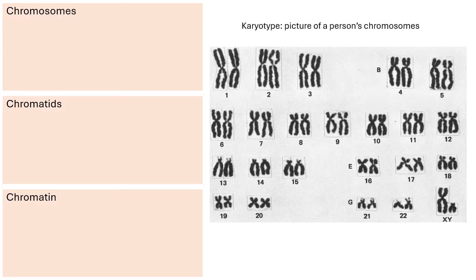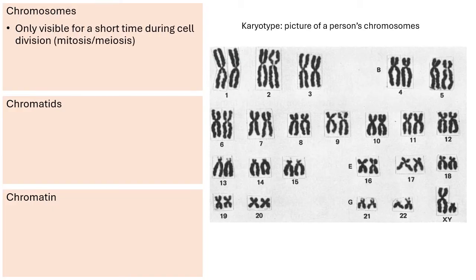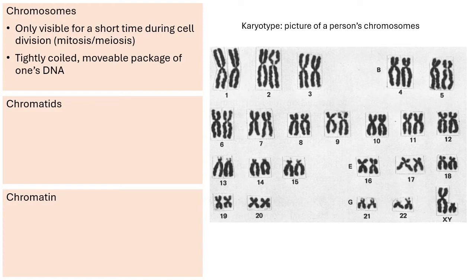Chromosomes are only visible for a short time during cell division, when cells do either mitosis or meiosis. Chromosomes are tightly coiled, movable packages of a person's DNA. The purpose of a chromosome is to put the DNA into a unit that is more movable, so when the cell goes through mitosis and meiosis, it can easily move its DNA as the cell divides.